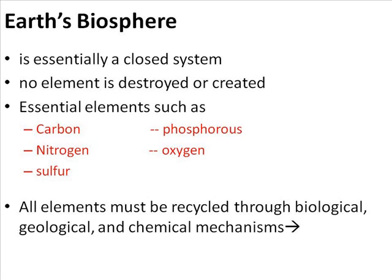These cycles are very important because organisms can only take up elements in a certain format. For example, we need nitrogen to be incorporated inside our amino acids and nucleotides. However, we cannot take nitrogen gas directly and incorporate those atoms into our amino acids. We need microorganisms to convert nitrogen gas into ammonia, into nitrites, into nitrates, and then other organisms incorporate the nitrogen into amino acids, which we then take up. Microorganisms will recycle these elements through biological, geological, and chemical mechanisms — making and breaking covalent bonds. We call these the biogeochemical cycles.